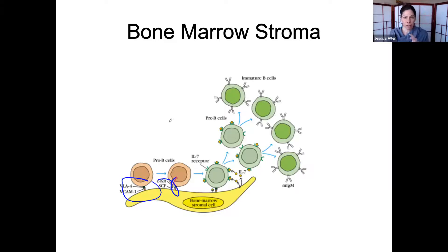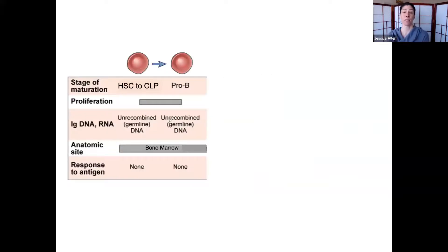After an HSC interacts with the bone marrow stroma, which is just cells in the bone marrow, it will become a pro-B cell. Not every stem cell becomes a pro-B cell, but some subset. We don't want all these cells.